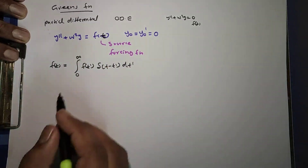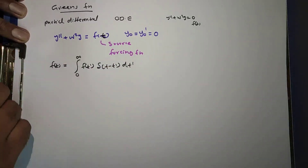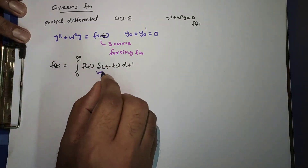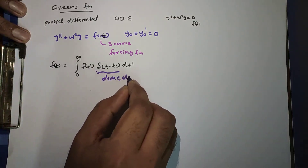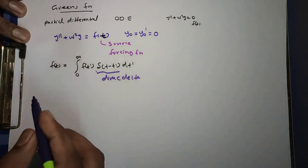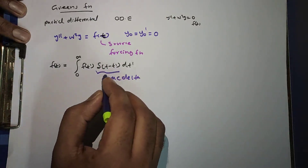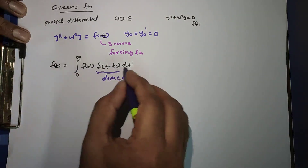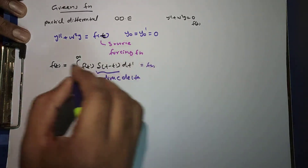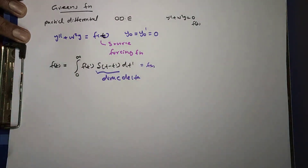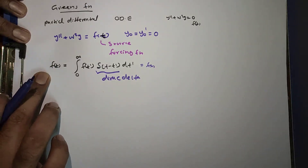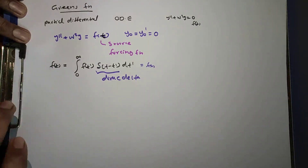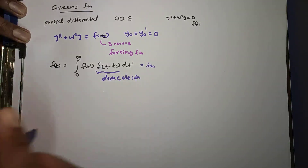Here, delta of t minus t prime is the Dirac delta function. Using the sifting property of the Dirac delta function, you will get back f of t. So we can think of the force f of t as a whole sequence of impulses.